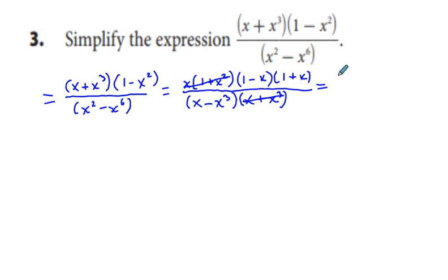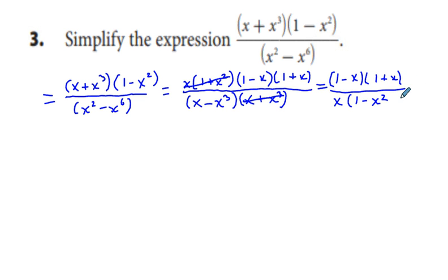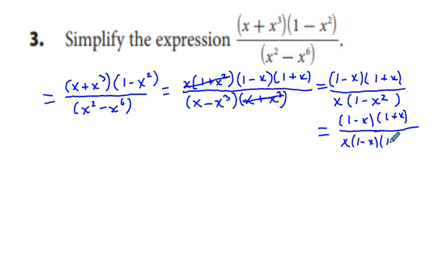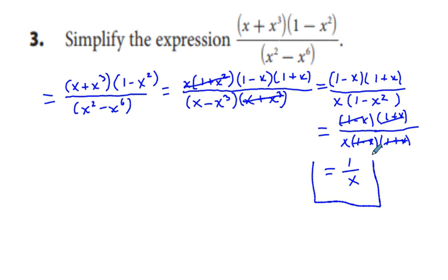Working to the right, we have quantity 1 minus x times quantity 1 plus x in the numerator, all over x times quantity 1 minus x squared. We factor 1 minus x squared as 1 minus x times 1 plus x. Then 1 minus x over 1 minus x cancels, leaving us with 1 over x as the simplified expression for this problem.